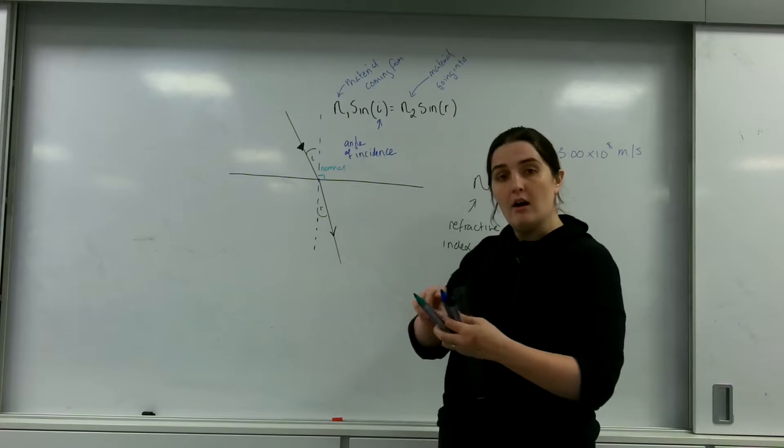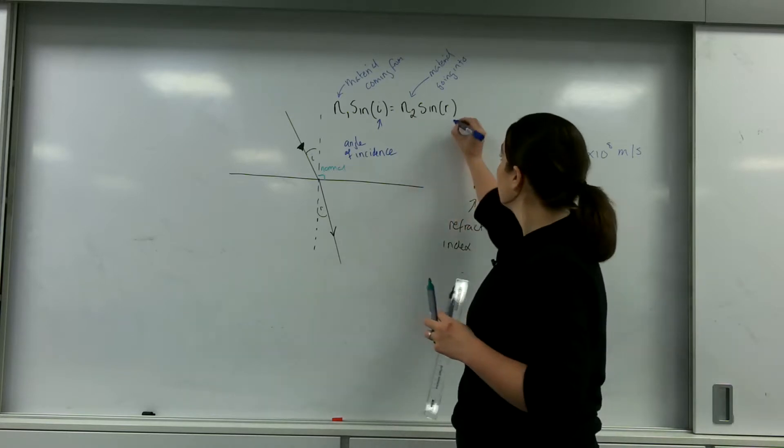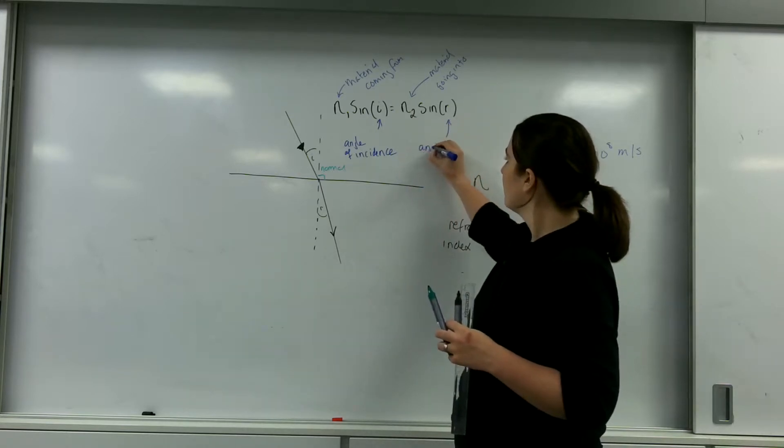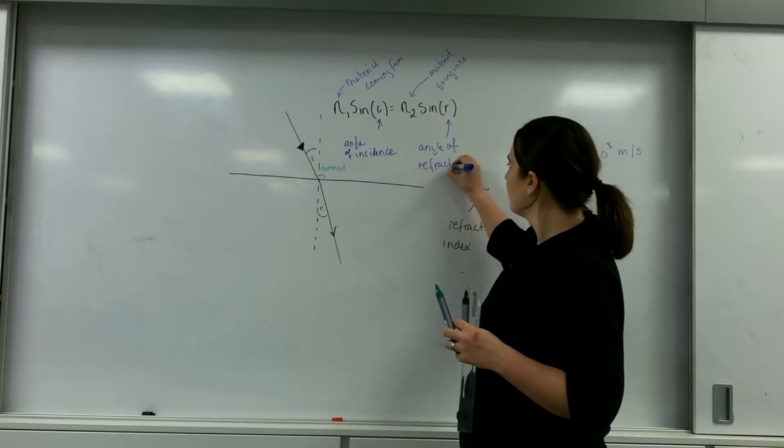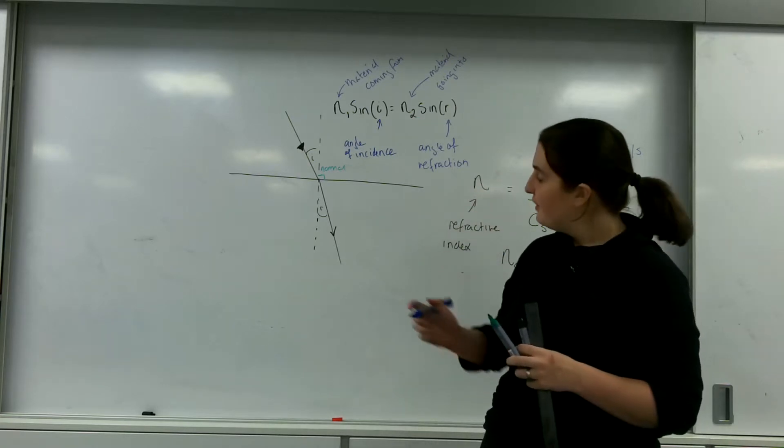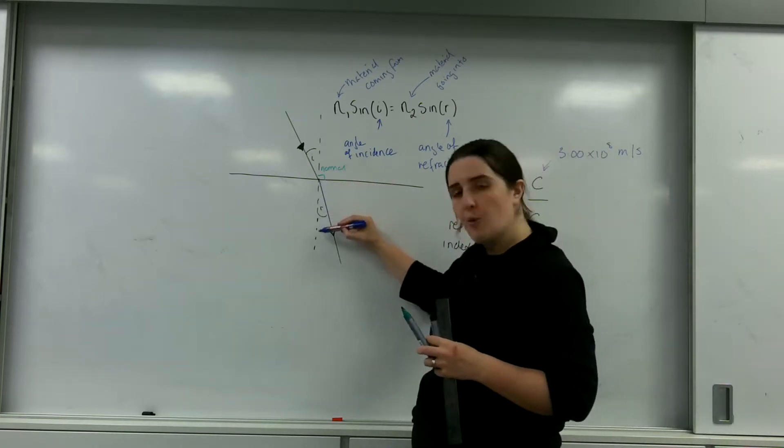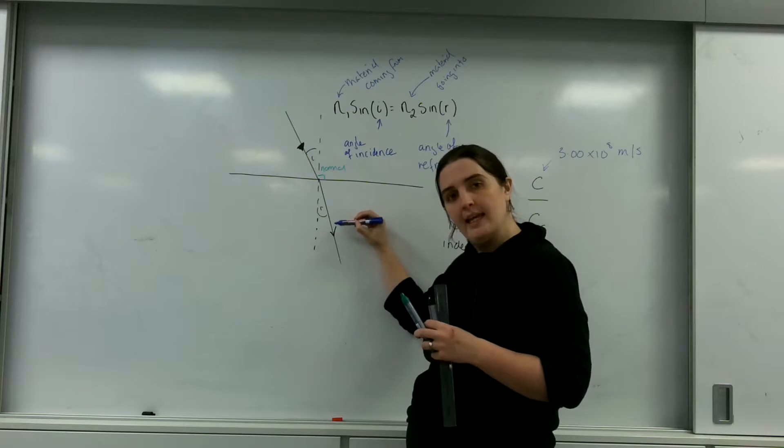This r is the angle of refraction. This is the angle from the normal line to the light ray inside.